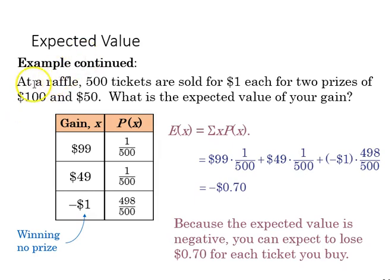The expected value for the raffle, the $99 is one out of 500. The $49 is also one out of 500, and then the chance of losing a dollar, 498 out of 500, and so given that we know that we can multiply these and add them together, and that's going to give us the mean of the distribution, which is our expected value. And in this case that works out to a loss of 70 cents, so we expect to lose 70 cents by entering into the raffle. Thank you.